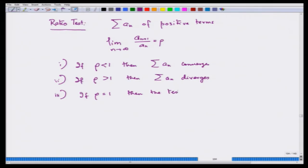If rho is equal to 1, then the test is inconclusive — you have to look for other tests or other methods to show convergence or divergence. We cannot make any conclusion. Let us try out an example that will show us this is an effective test.